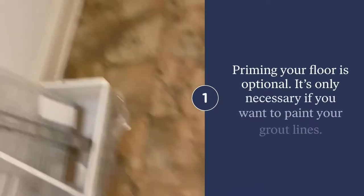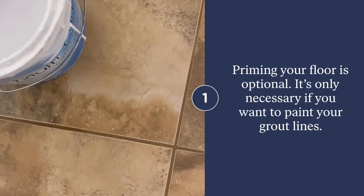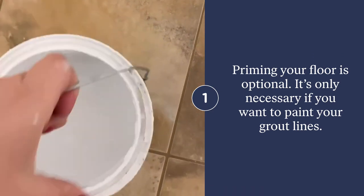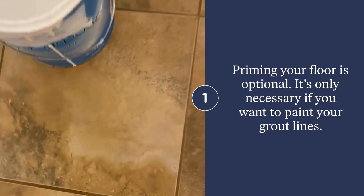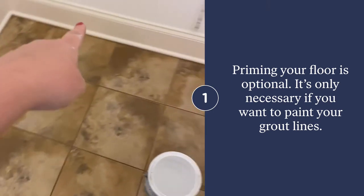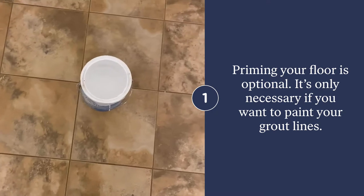So now I am going to prime the floor. I'll show you what I'm using. It's just a Sherwin-Williams multipurpose latex primer. And I'm going to cut in around the edges first and then I'll roll the bulk of it. So it should be super fast and easy.